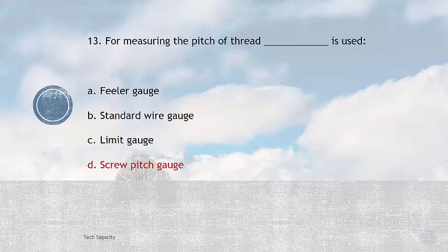For measuring the pitch of thread, screw pitch gauge is used. Options are feeler gauge, standard wire gauge, limit gauge, and screw pitch gauge. The answer is the fourth one, screw pitch gauge, which is used to measure the pitch of threads.